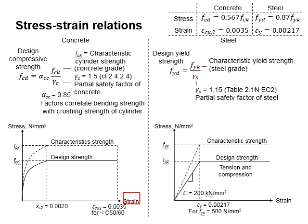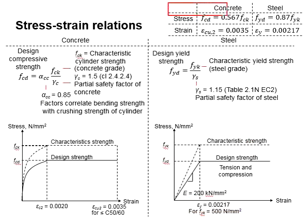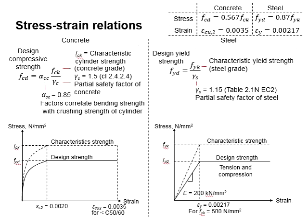As for the strain, there are limits for concrete and steel. For concrete grade less than grade 50, the maximum strain will be 0.0035. As for steel, the yield strain will be equal to 0.00217. These values are essential in the analysis of reinforced concrete sections, which will be discussed in the following videos.